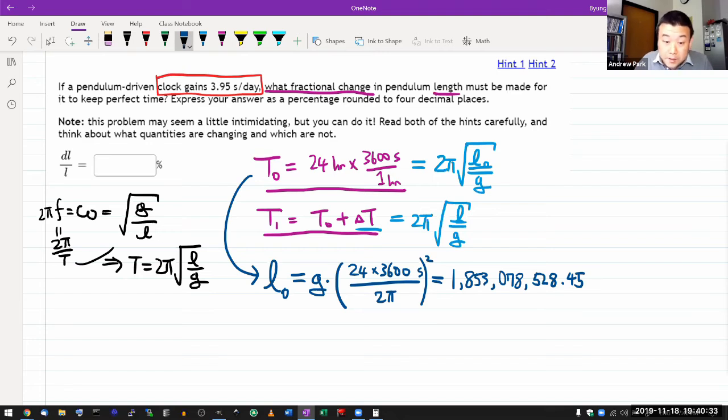So the formula for L is actually exactly the same. The only difference is instead of using just this time, I add 3.95 seconds. So that's G times that time, let me just write that, 24 times 3600 plus 3.95 seconds divided by 2 pi, the whole thing squared.